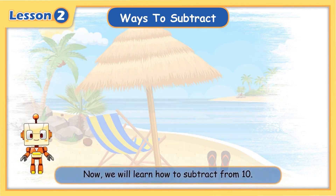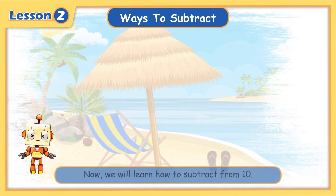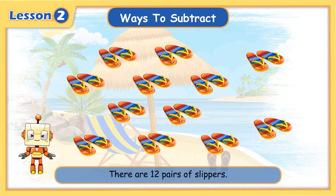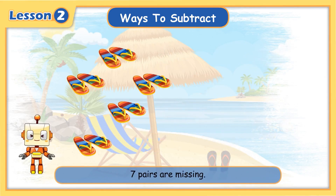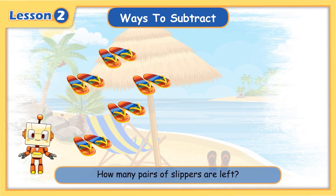Now we will learn how to subtract from 10. There are 12 pairs of slippers — seven pairs are missing. How many pairs of slippers are left?